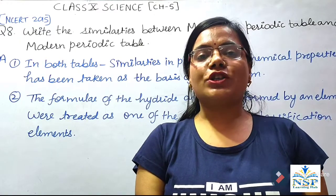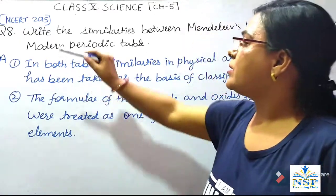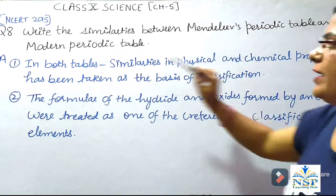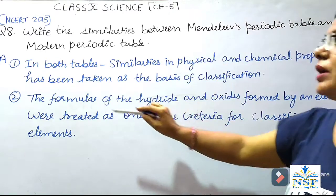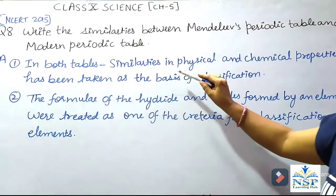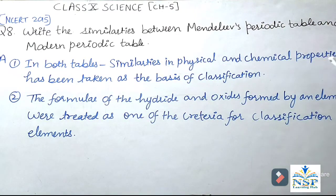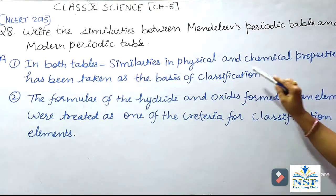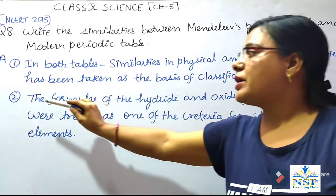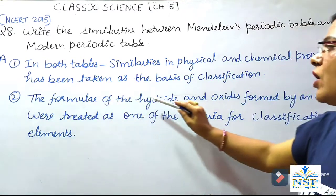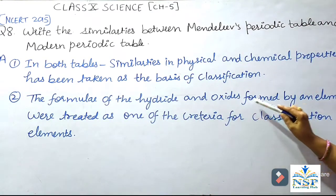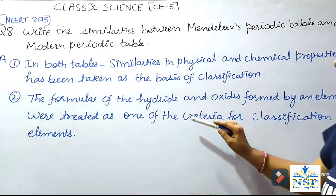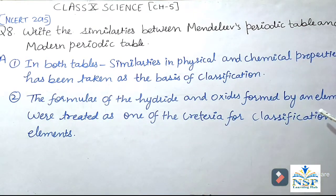Question No. 8: Write the similarities between Mendeleev's Periodic Table and the Modern Periodic Table. In both tables, similarities in physical and chemical properties have been taken as the basis of classification. Second, the formulae of the hydrides and oxides formed by an element were treated as one of the criteria for classification of elements.